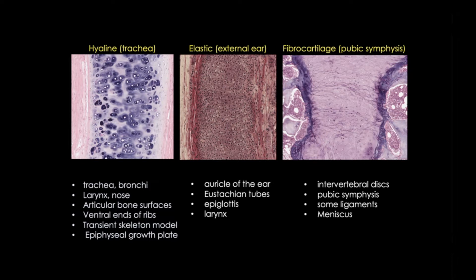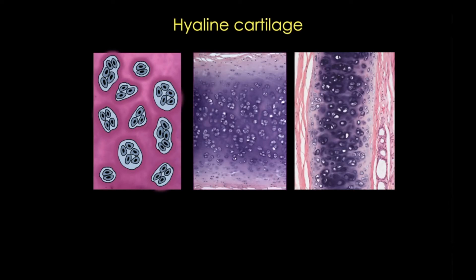In practice, what this means is that there will be other clues besides morphology to help you recognize which type of cartilage you're looking at. For now, let's compare the characteristics of each type, and we'll start with hyaline cartilage. Hyaline cartilage is the most common and probably the most recognizable cartilage subtype. First, you want to identify this tissue by the presence of chondrocytes — I sometimes think of this as looking at those craft googly eyes.